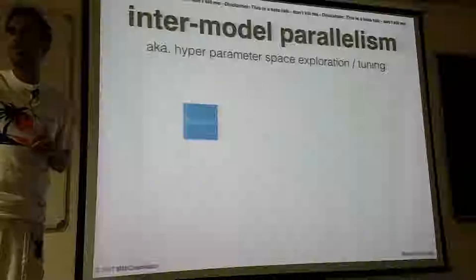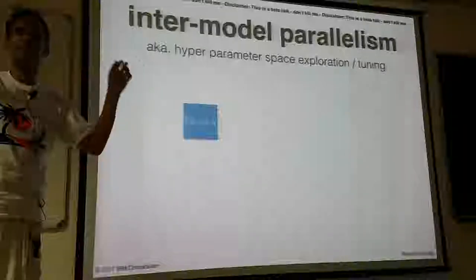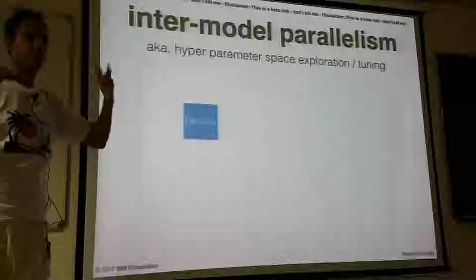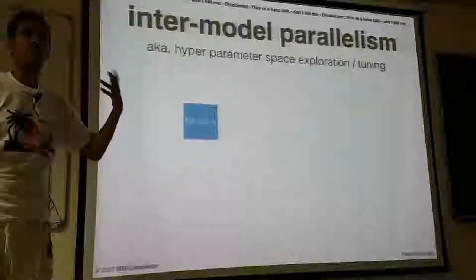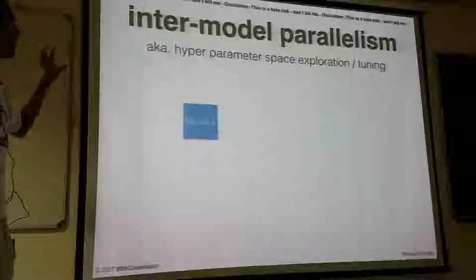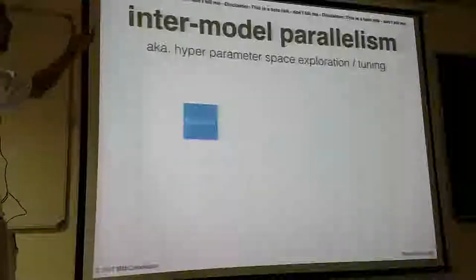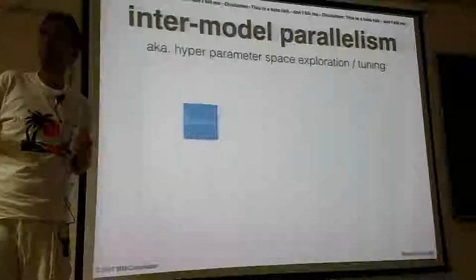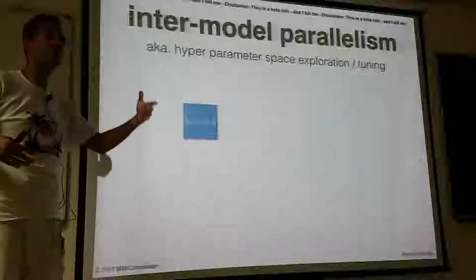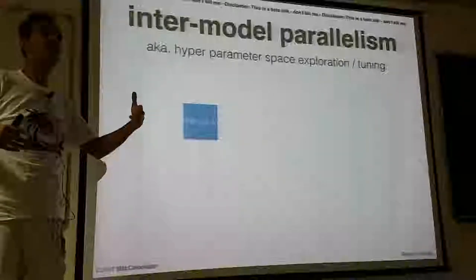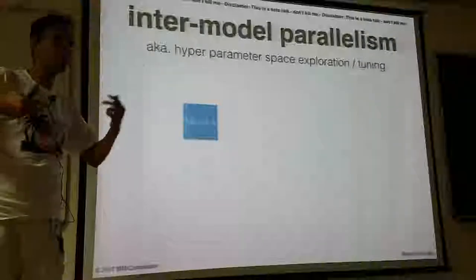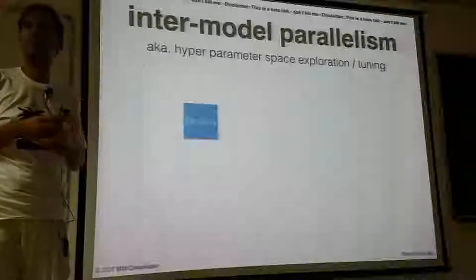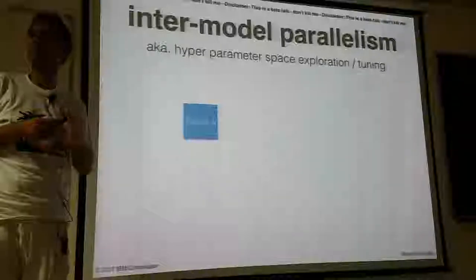The parameters are the weight matrices — the different weight vectors in each layer. Those are the parameters you train using gradient descent. But there's a set of hyperparameters in each model: for example, number of layers, number of neurons, type of activation functions, learning rate, type of optimizer, and so on. Those hyperparameters are still considered black magic when choosing the correct ones.